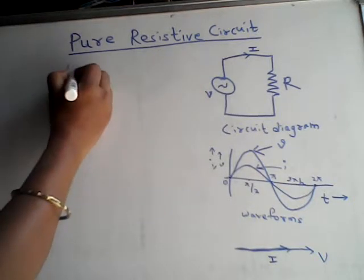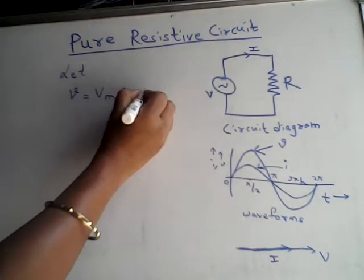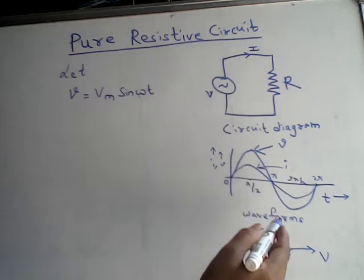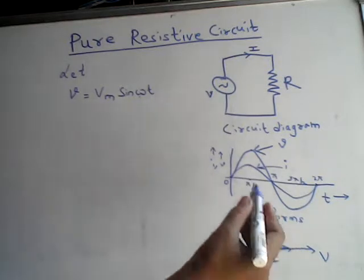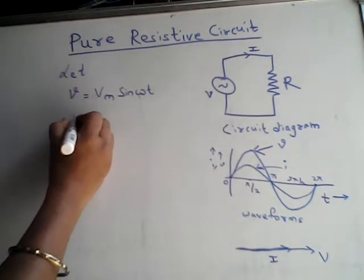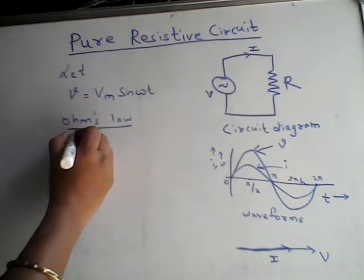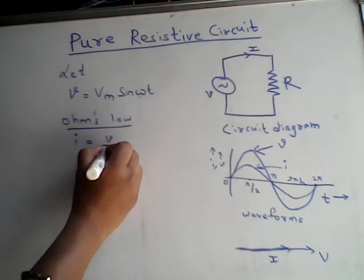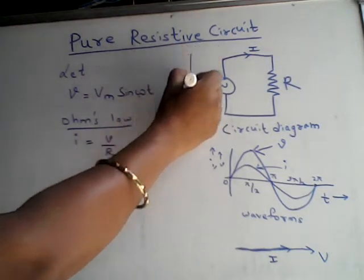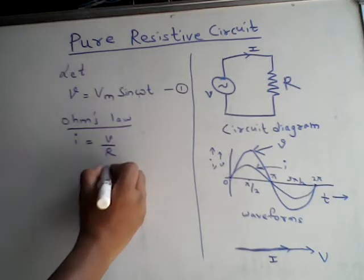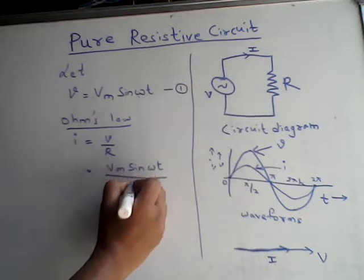Now let the voltage be represented by v = Vm·sin(ωt), because voltage is a sine function and current is also a sine function. From Ohm's law, i = v/R, and substituting equation 1, we get i = Vm·sin(ωt) divided by R.